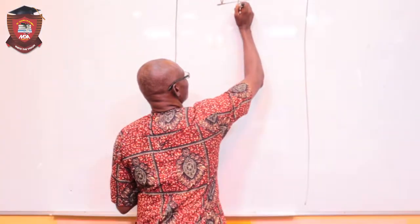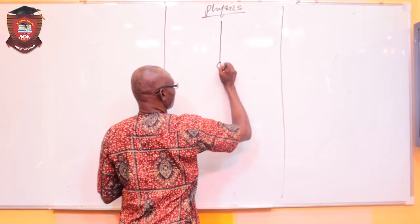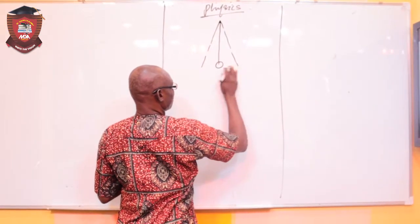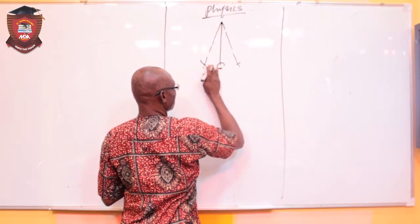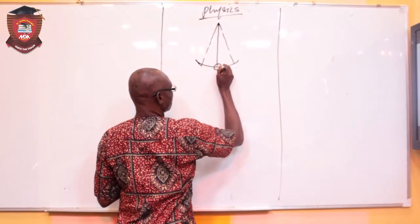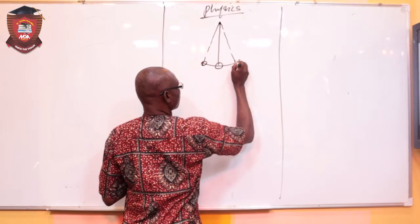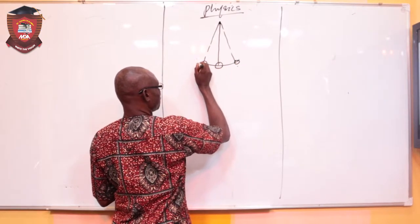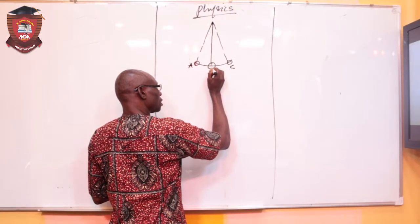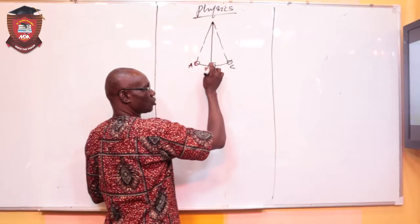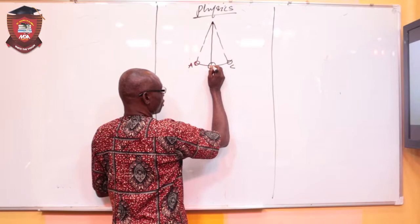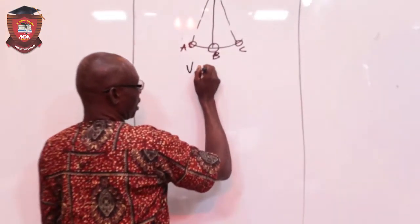Now, from the question, this is a simple pendulum. And when you displace this pendulum, it is displaced through the center. This is a simple pendulum. When I displace the pendulum here, this is point A, B, and C. Point B is the position of the lowest point. And that is the point that has V as maximum.